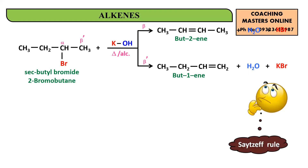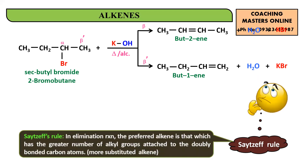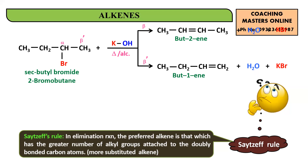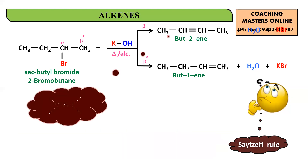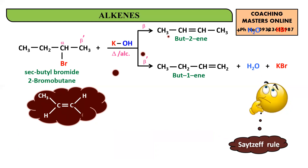This question is answered by Zaitsev's rule. Zaitsev's rule states that in an elimination reaction, the preferred alkene is the one that has the greater number of alkyl groups attached to the doubly bonded carbon atoms — meaning the more substituted alkene. For example, in the first compound CH3-CH=CH-CH3, one doubly bonded carbon is connected to CH3 and the other also to CH3.